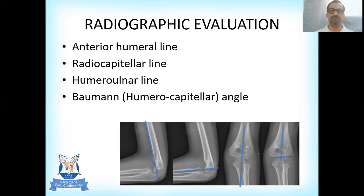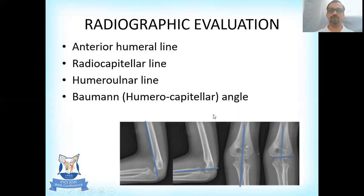Radiographic evaluation is very important. The lines used to evaluate elbow x-rays include: the anterior humeral line, which tells us the alignment of the capitellum relative to the humeral shaft and should bisect the capitellum; the radiocapitellar line, drawn along the shaft of the radius, which should also bisect the capitellum but may pass slightly more superior in a younger child; the humeroulnar line, which indicates any lateral subluxation; and the Baumann or humerocapitellar angle.